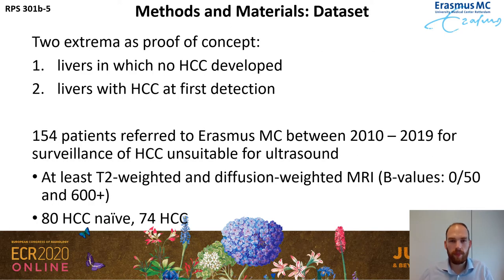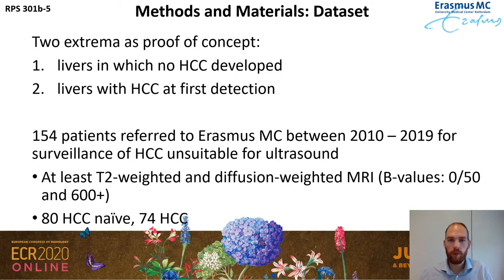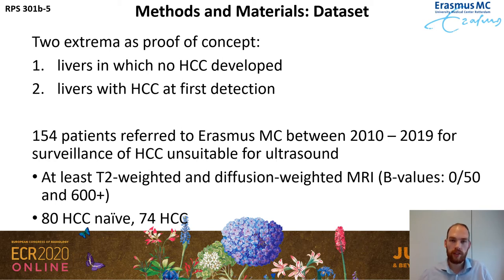Let's first take a look at the dataset we used. As a proof of concept we first looked at two extrema. On one hand we have livers in which no HCC developed during the whole surveillance period. On the other hand we have livers at the point of first detection of HCC, so the HCC is already present at this time. We ended up with 150 patients who were referred to a hospital for HCC surveillance. All of these patients have at least a T2-weighted and a diffusion-weighted MRI. We have two B values for the diffusion-weighted imaging — a high and a low one — but since the low B value image is similar to the T2, we will only use the high B value image. About half of all these patients are HCC-naïve, meaning they did not develop an HCC, and about half developed an HCC.